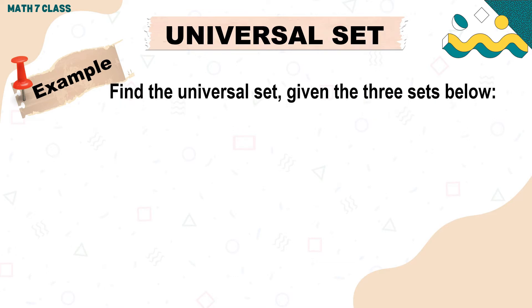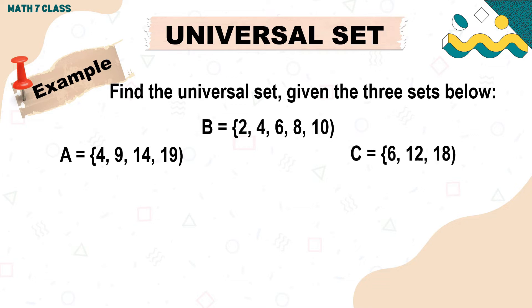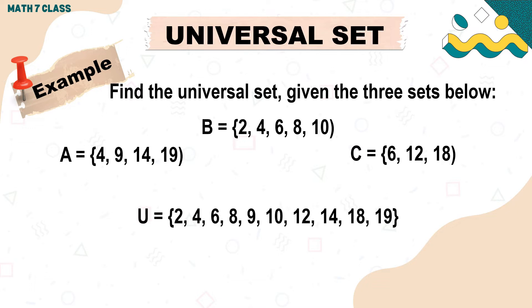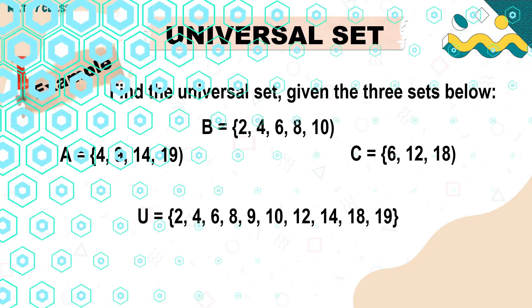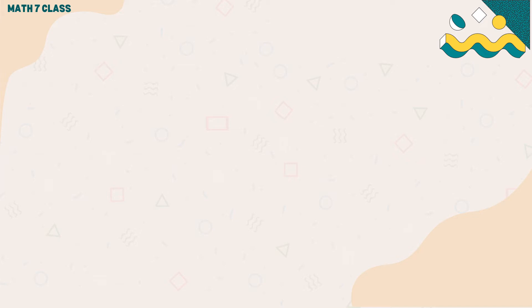Let's try this example: find the universal set given the three sets below. The universal set is 2, 4, 6, 8, 9, 10, 12, 14, 18, and 19. These are from subsets A, B, and C.